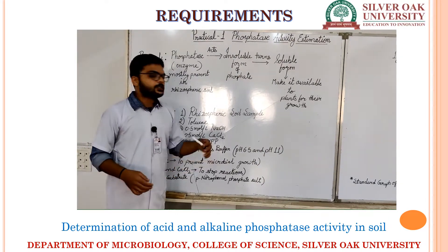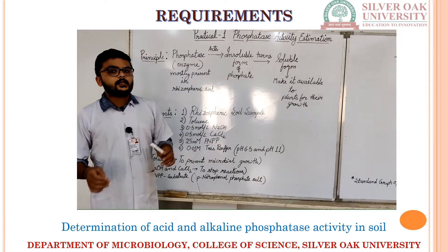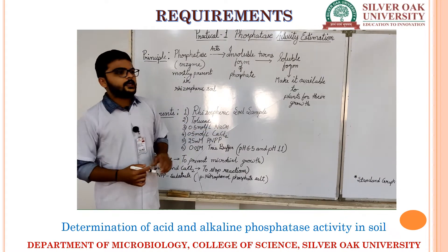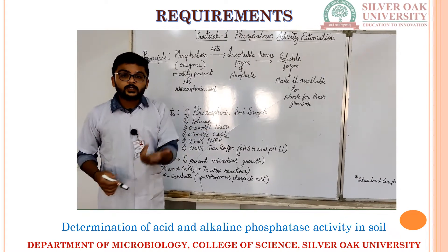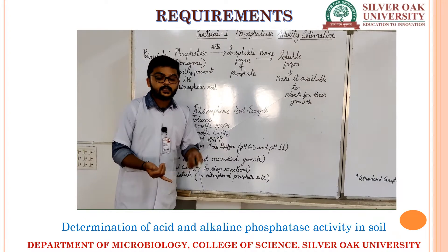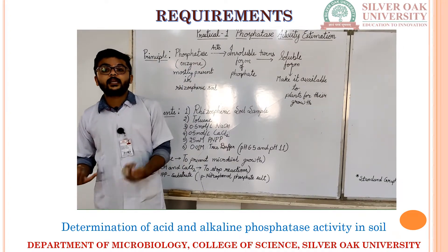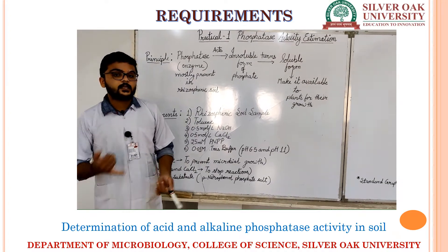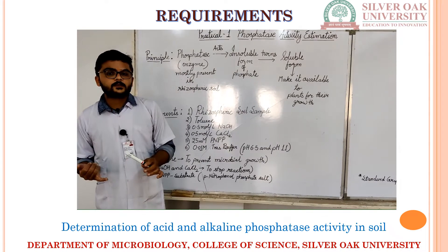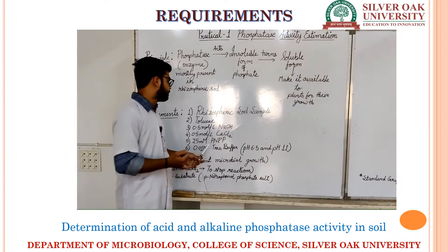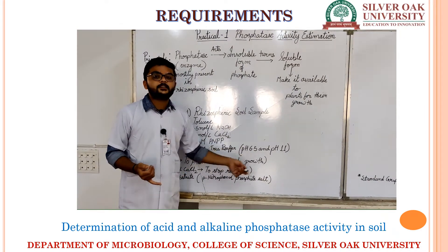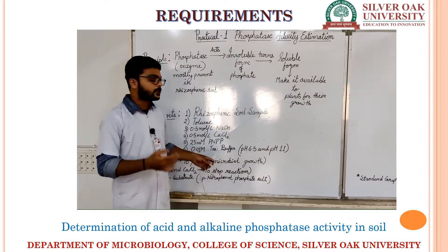We use p-nitrophenol phosphate, which will act as a substrate for the phosphatase in our solution — we are providing the substrate from outside. Phosphatase enzyme is of two types available in the soil: one is acidic phosphatase and the second one is alkaline phosphatase. We are trying to analyze both types of phosphatase, and that is why we require specific pH values in our system.